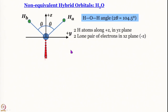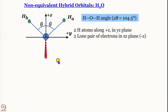In the water molecule, the bond angle is not 109.5° as expected for tetrahedral geometry. You would expect the oxygen atom to be sp³ hybridized because it needs 4 hybrid orbitals — 2 for the bond pair and 2 for the lone pair — but the bond angle experimentally observed for water is 104.5°.